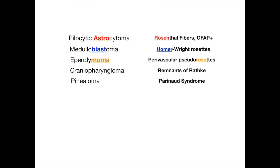For ependymoma, you get perivascular pseudorosettes. The mnemonic: think 'ependymama' — you forget your mom's birthday, so you give her a rose, which is the pseudorosette. But since it's a pseudorosette, pseudo means sort of or kind of. You gave your mom a rose to somewhat make up for forgetting her birthday. Ependymoma = perivascular pseudorosettes.